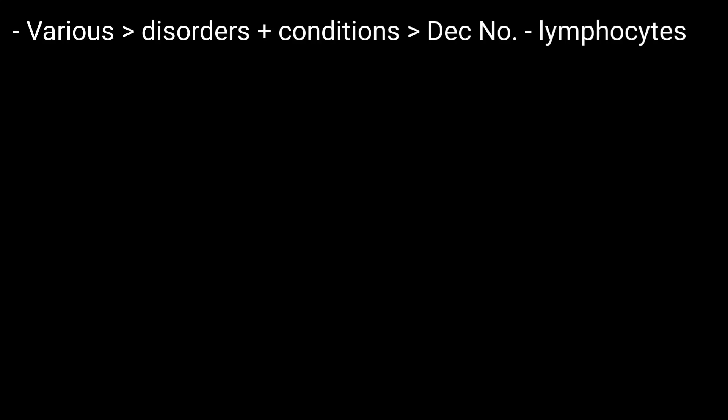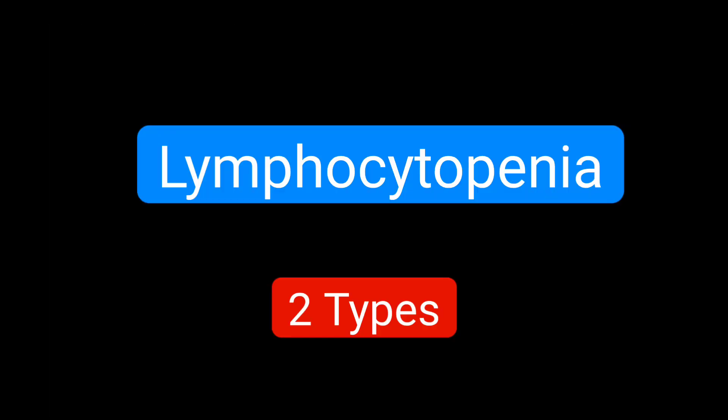Causes of low lymphocytes. Various disorders and conditions can decrease the number of lymphocytes in the blood. Lymphocytopenia, which is the term used for a low number of lymphocytes, is of two types.